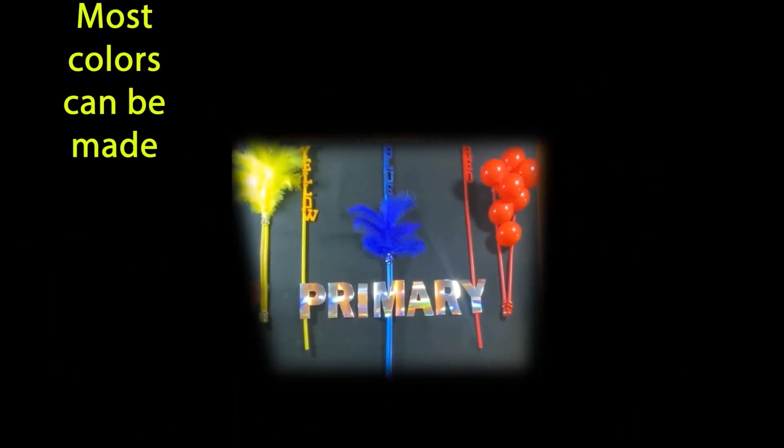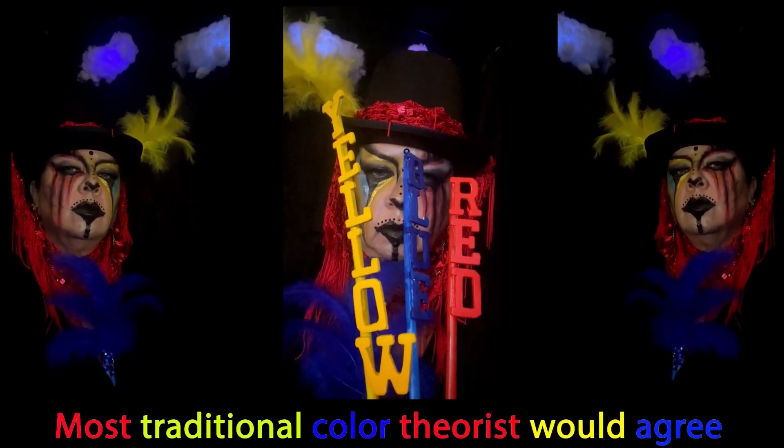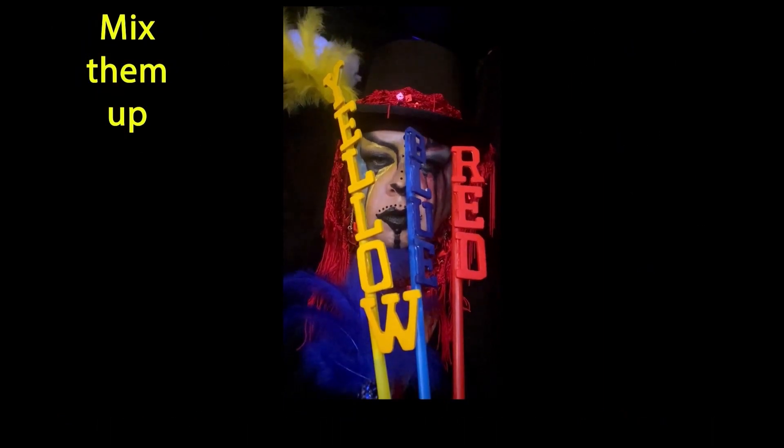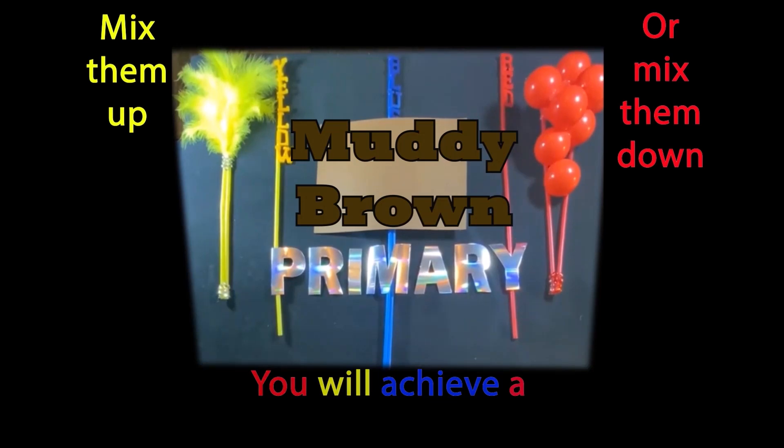Most colors can be made by a combination of the three. Most traditional color theorists would agree. Mix them up or mix them down, you will achieve a muddy brown.